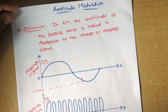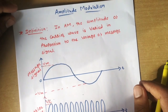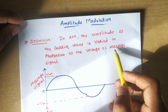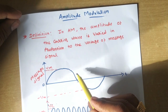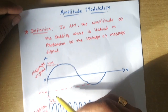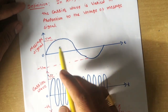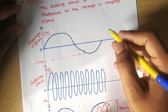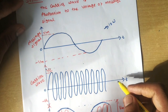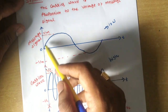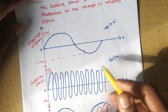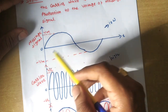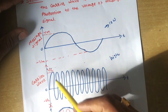Let us start with the definition of amplitude modulation. In AM, the amplitude of the carrier wave is varied in proportion to the voltage of the message signal. So with respect to the amplitude of your message signal, the amplitude of the carrier wave is changed. The message signal is of low frequency and the carrier signal is of high frequency — fewer repetitions versus more repetitions — and we multiply them, varying the characteristics of the higher frequency signal.